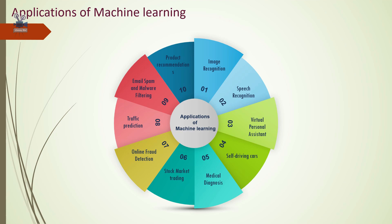Prediction: machine learning can be used in prediction systems. Considering the loan example, to compute the probability of a fault, the system will need to classify available data in groups. Image recognition: machine learning can be used for face detection in an image. There is a separate category for each person in a database for several people.